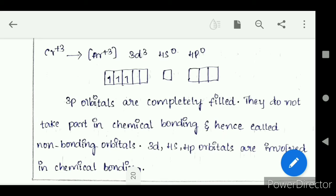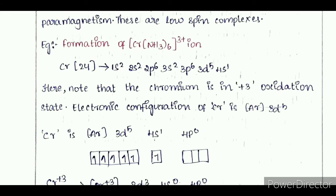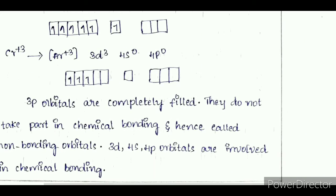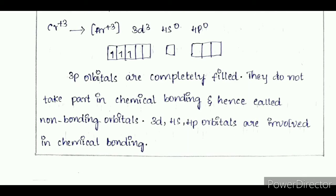The 3P orbitals are completely filled. They do not take part in chemical bonding and hence are called non-bonding orbitals. The 3D, 4S, and 4P orbitals are involved in chemical bonding — this is the ground state configuration.